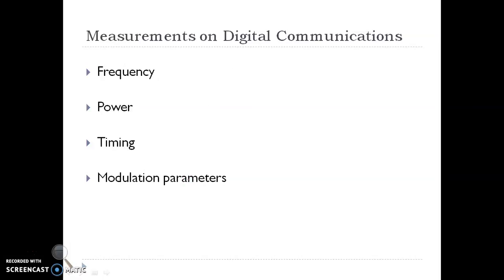Measurements on digital communication systems can be broadly classified into frequency, power, timing, and modulation parameters.